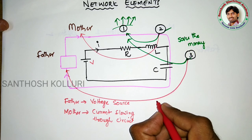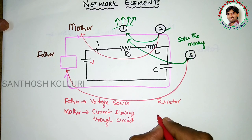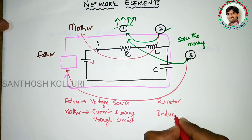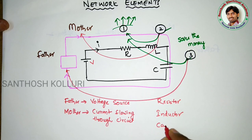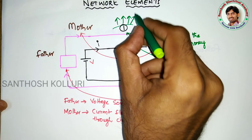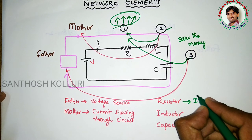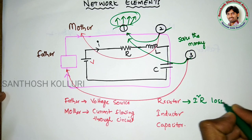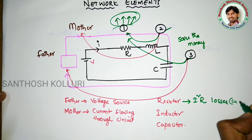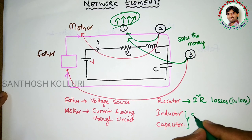Child one is a resistor, child number two is an inductor, and child number three is the capacitor. The resistor is always going to spend whatever current flows through the circuit in the form of I-squared-R losses — we can call these copper losses. The other two elements, the inductor and capacitor, are the storage elements.